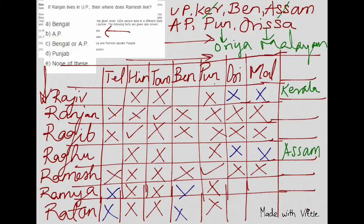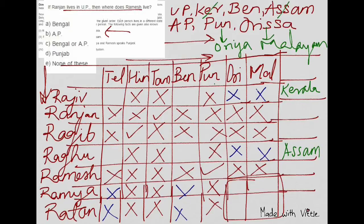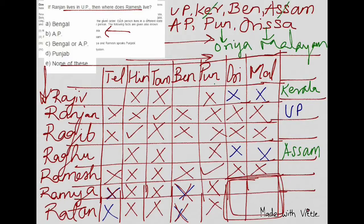Now another question: 'If Rajan lives in UP, where does Ramesh live?' I've cleared the previous question's assumptions. The key takeaway from this LR passage: if extra data is not in the main question, do not assume it carries forward unless specified. So if Rajan lives in UP, mark UP for Rajan and see what we can now determine about Ramesh's location by eliminating the remaining places.